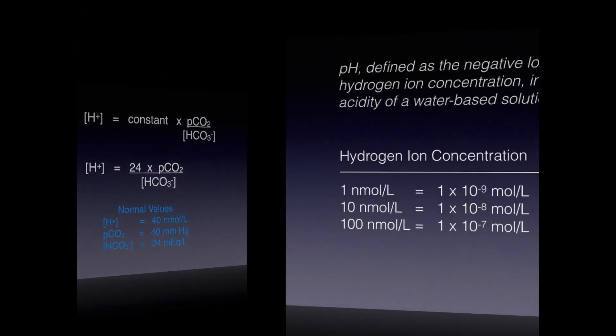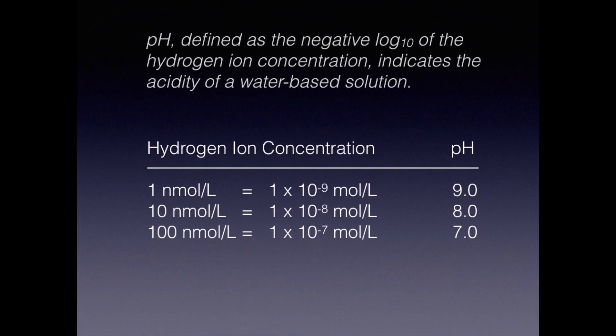The term pH is used to describe the acidity of a water-based solution. As you know, pH is defined as the negative log base 10 of the molar hydrogen ion concentration. A solution with a low pH is more acidic than a solution with a higher pH. Since we are interested in nanomolar concentrations of hydrogen ions, note that one nanomole per liter equals 10 to the minus ninth mole per liter equals pH of 9.0. A solution with a hydrogen ion concentration of 10 nanomoles per liter equals 10 to the minus eighth mole per liter, which equals a pH of 8.0. And as we saw on the nomogram, 100 nanomole per liter hydrogen ion concentration equals 10 to the minus seventh mole per liter, which equals a pH of 7.0.